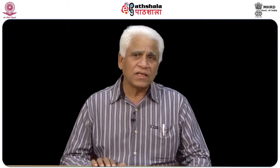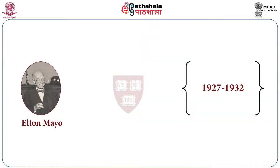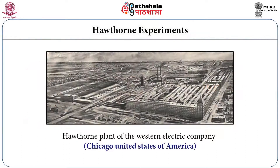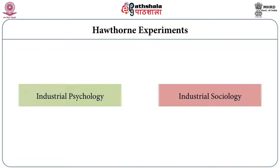Human relations theory is also known as neoclassical theory. The first theory of public administration is known as the classical theory, the second is neoclassical theory, and the third major theory is the behavioral theory. This human relations theory is called by William G. Scott as neoclassical theory, because it is a kind of link — a bridge — between the classical theory and the behavioral theory.